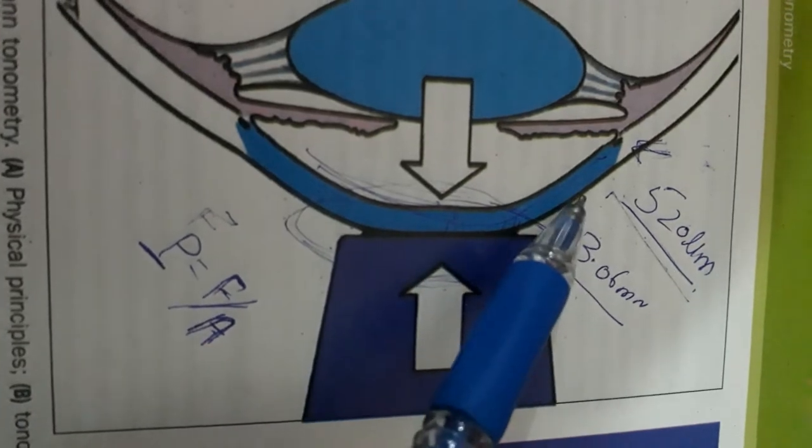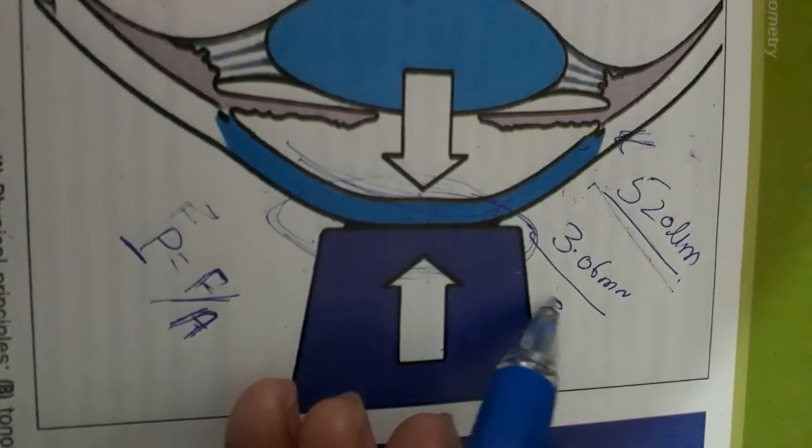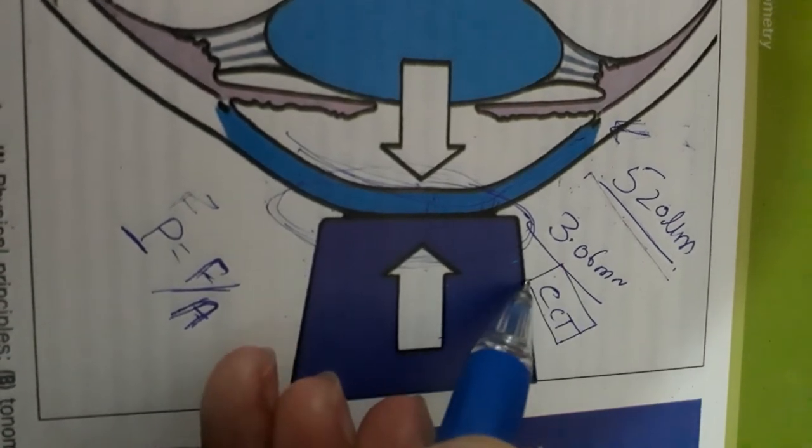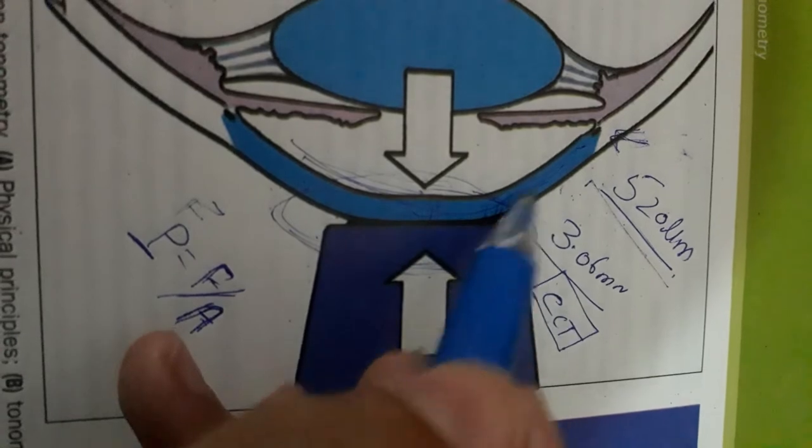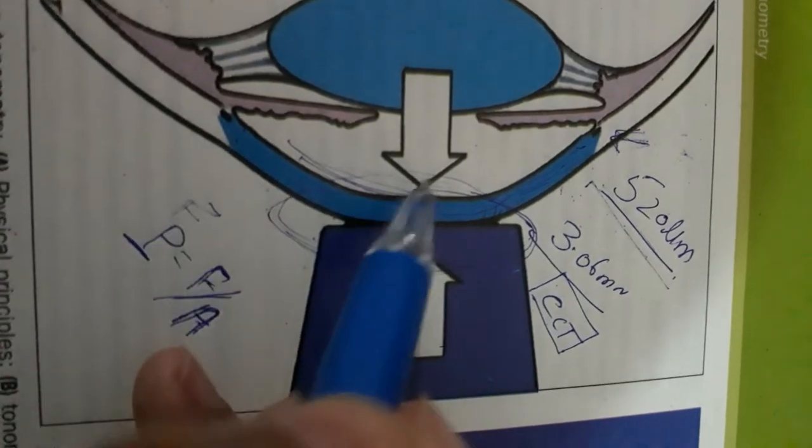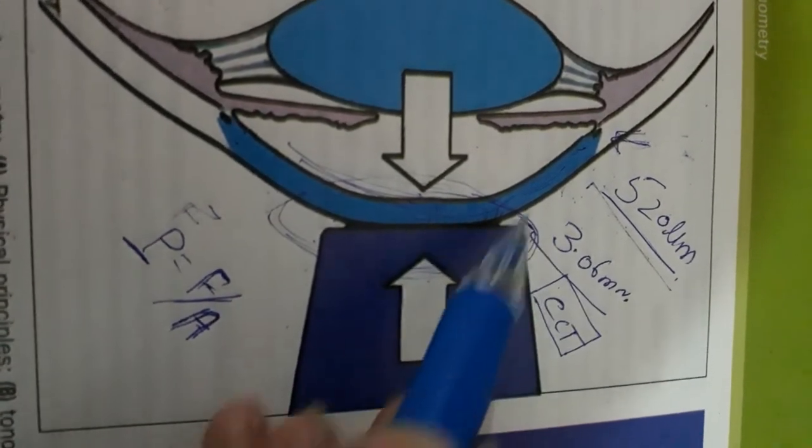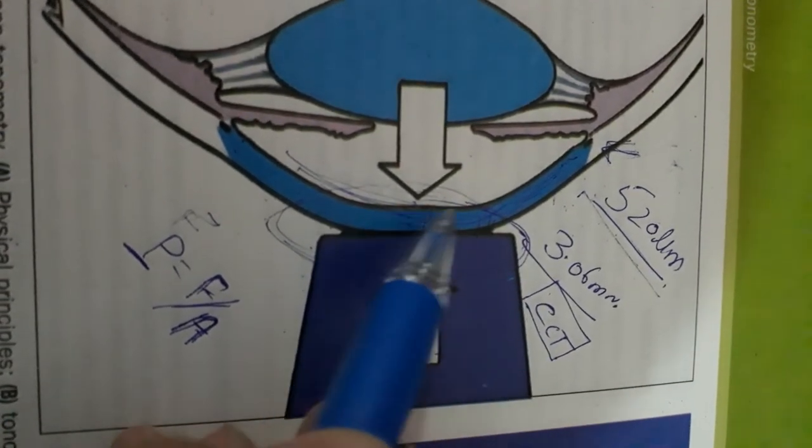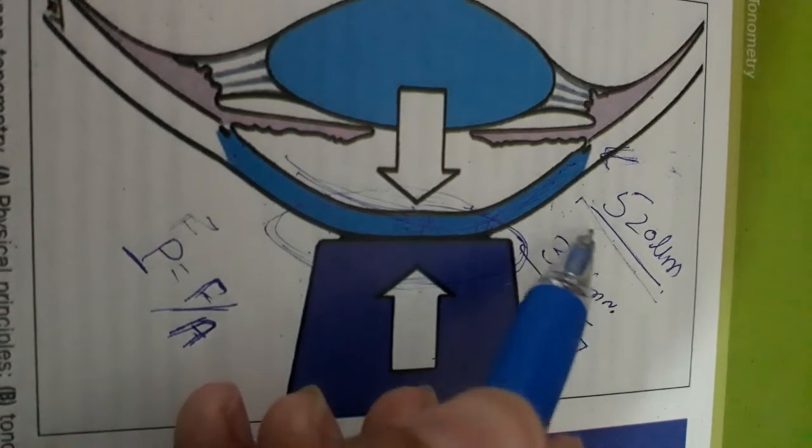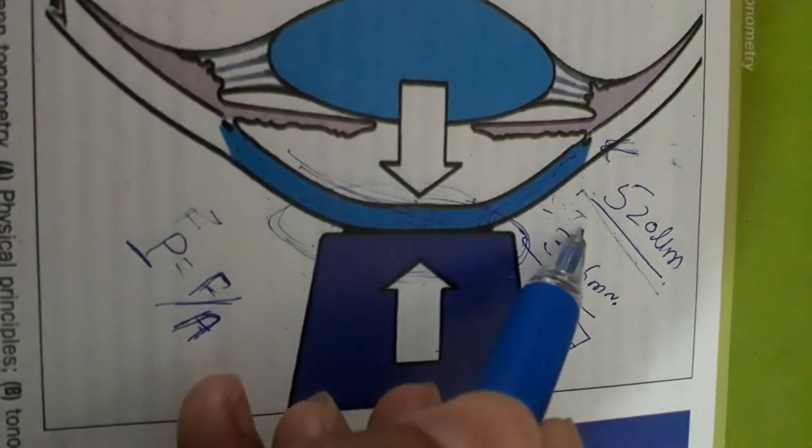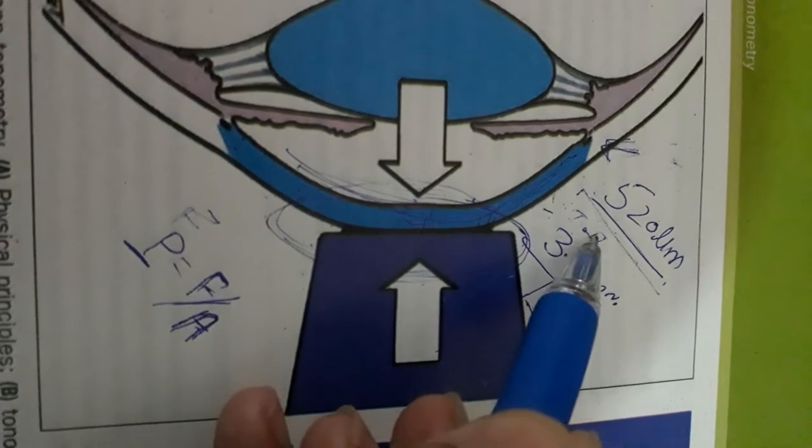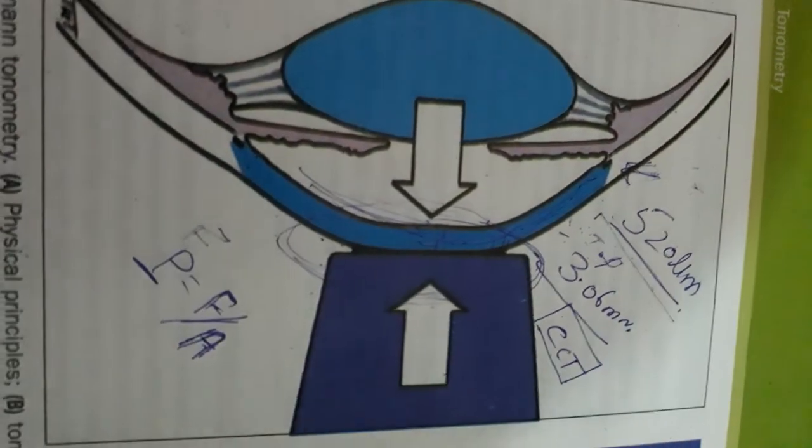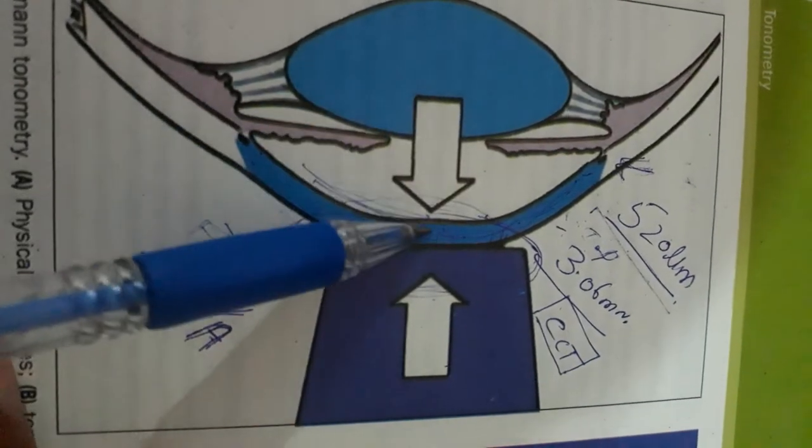The most important thing is central corneal thickness (CCT), because any change in the cornea will change the IOP measurement. If the cornea is thick, there will be overestimation of IOP. If the cornea is thin, there will be underestimation of IOP.